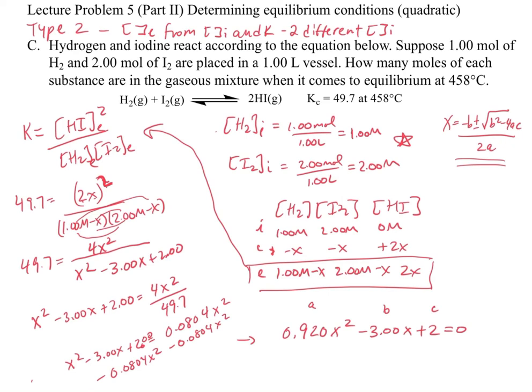So again, the quadratic equation is going to solve it, and it's going to give you two possible roots. And the two roots are going to be, x1 is equal to 2.326. And x2 is going to be equal to 0.934. And these have units of molar.